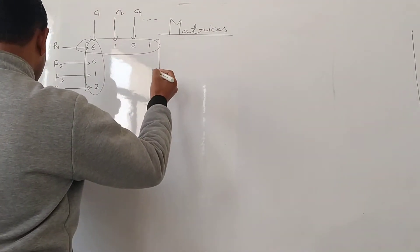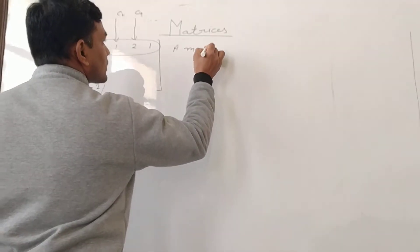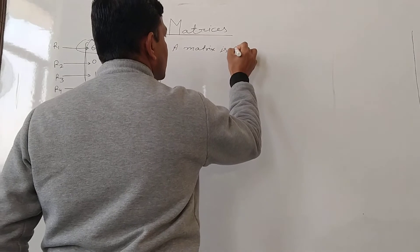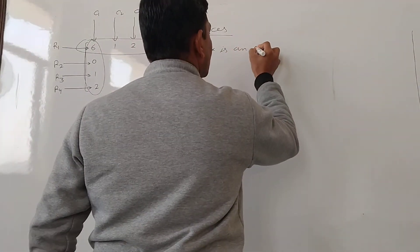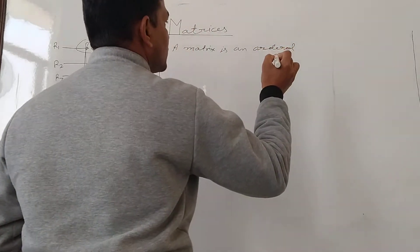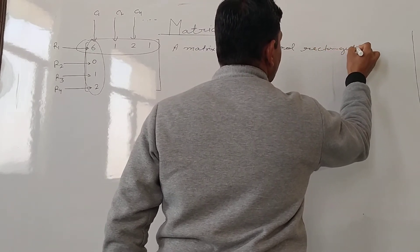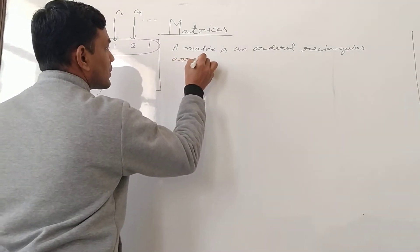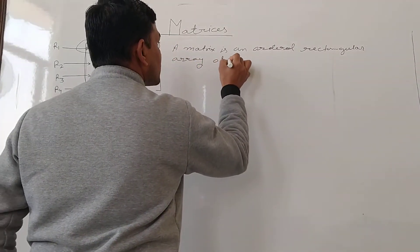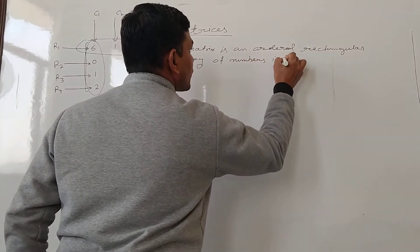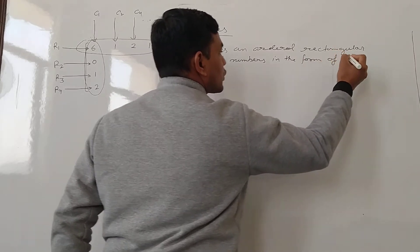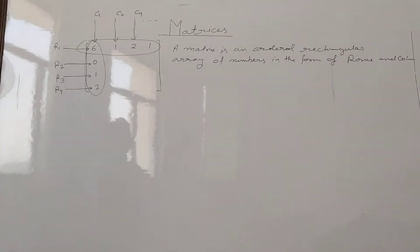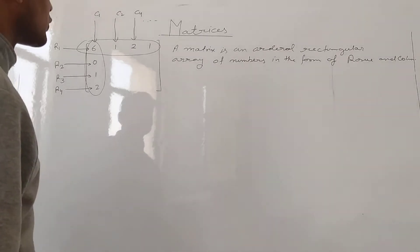So the definition of the matrix is: a matrix is an ordered rectangular array of numbers in the form of rows and columns.